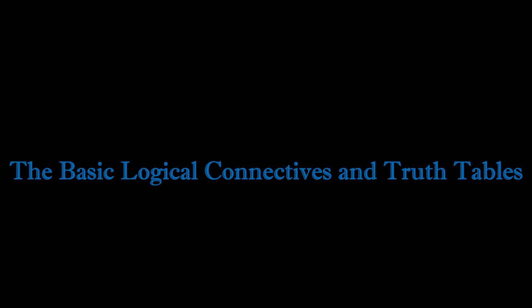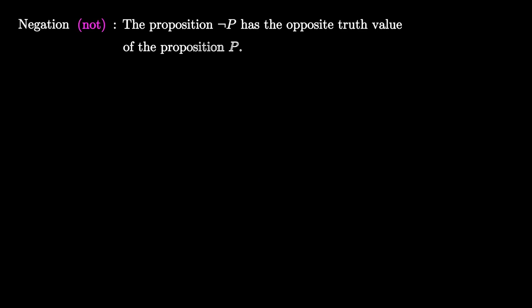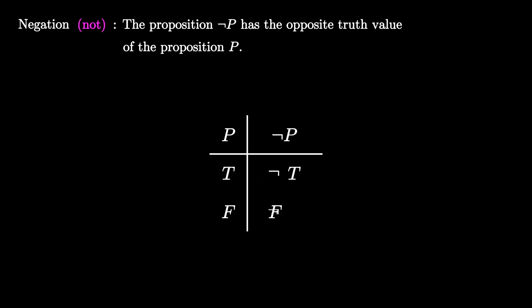Because mathematical propositions are either true or false, we can define the logical connectives in terms of their truth tables. The first connective we will look at is the negation, or the NOT connective. The proposition NOT P has the opposite truth value of P. Because P can take on two values of true or false, NOT P can have two values as well — the negation of true is false, and the negation of false is true. This is the truth table for the NOT connective.